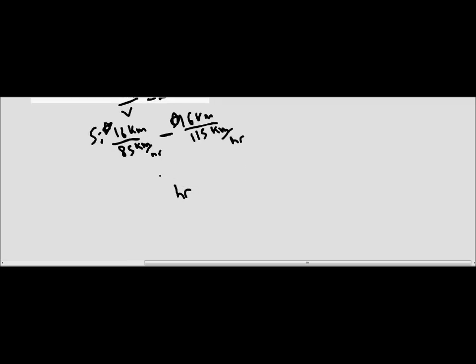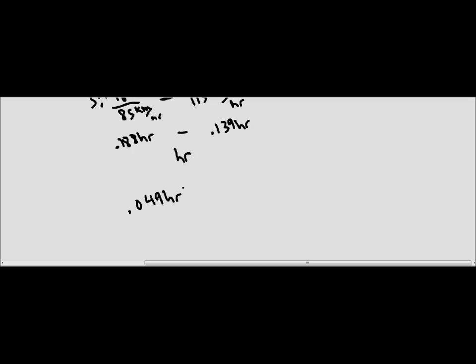The answer you'll end up with is going to be in hours, and for both of these they end up with decimals. This one ends up, having rounded it, 0.188 hours, and this one ends up with 0.139 hours. When you subtract these, you get about 0.049 hours. No one is going to know what 0.049 hours actually is — it's such a strange term and no one's going to be able to recognize it.